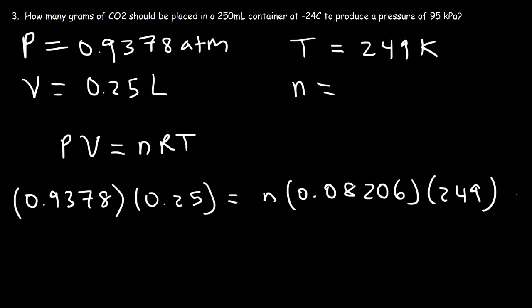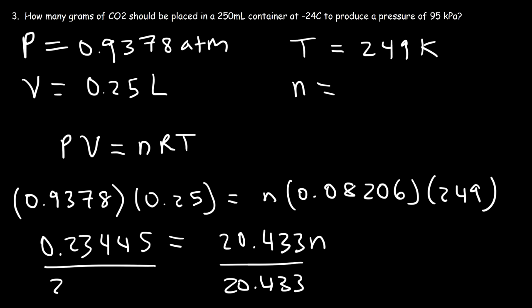So first let's multiply 0.9378 by 0.25, so that's 0.23445. And then on the right side let's multiply 0.08206 by 249, and so that's 20.433 times n. So to calculate n we need to divide 0.23445 by 20.433, and you should get 0.01147 moles.